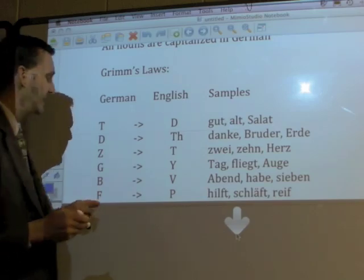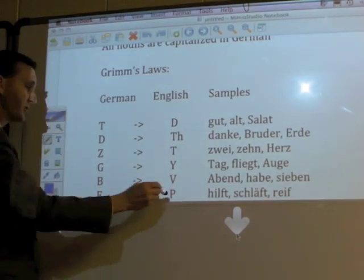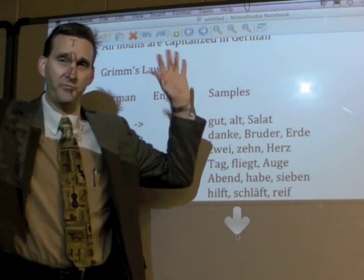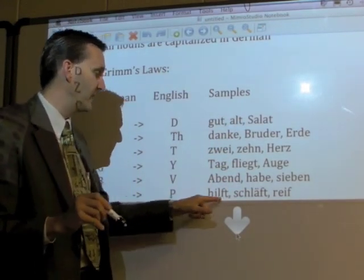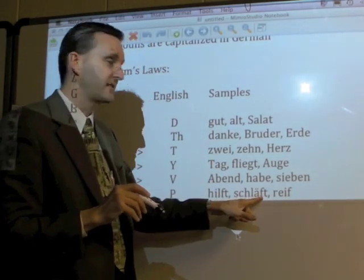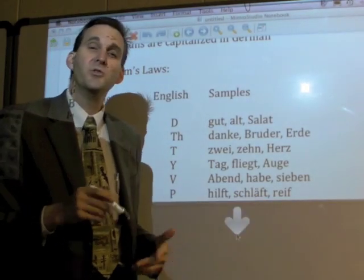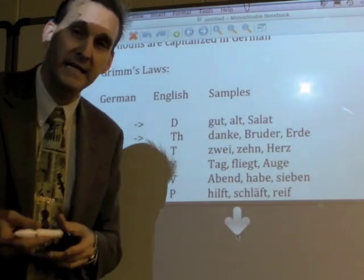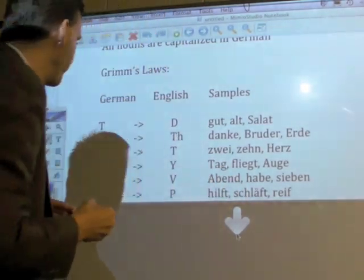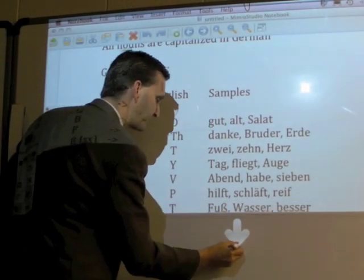The F in German becomes a P in English. Like 'hilft' — that's 'help', so the F becomes a P. Or 'schläft' — 'schläft' becomes 'sleeps'. Or 'reif' — if the F becomes a P, that's 'ripe', like the fruit is ripe. Are you getting these down?